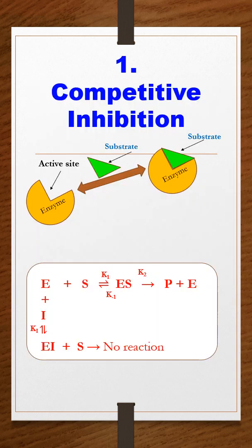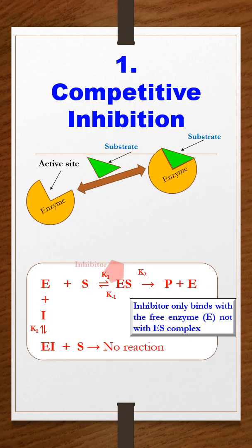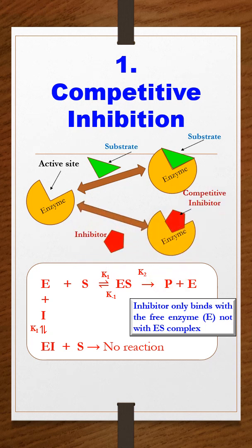In competitive inhibition, the inhibitor has structural similarity with the substrate. Therefore, there is competition between inhibitor and substrate for binding at the active site of the free enzyme, and inhibition occurs.